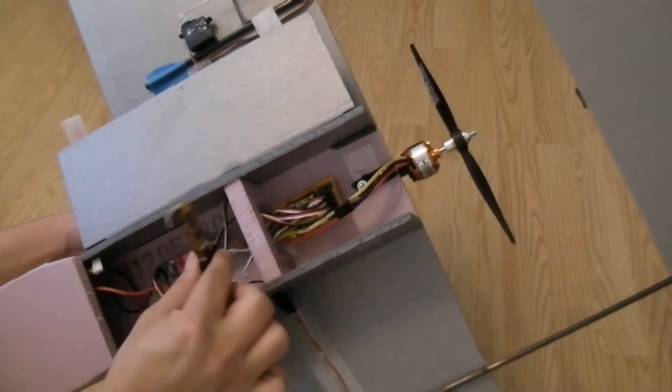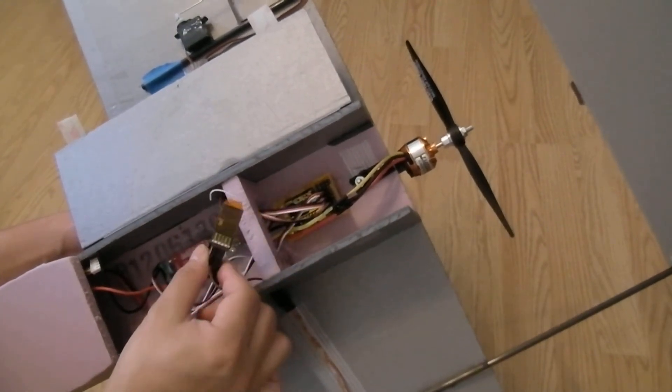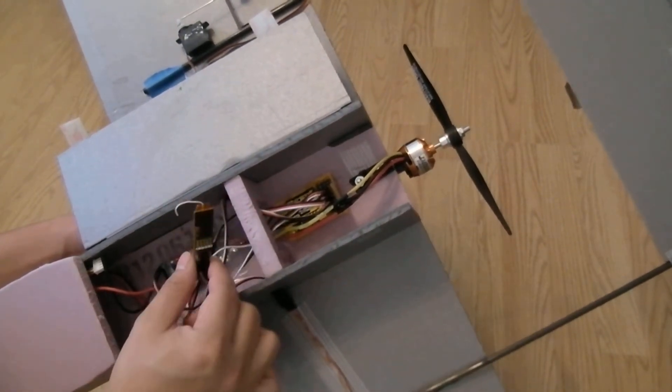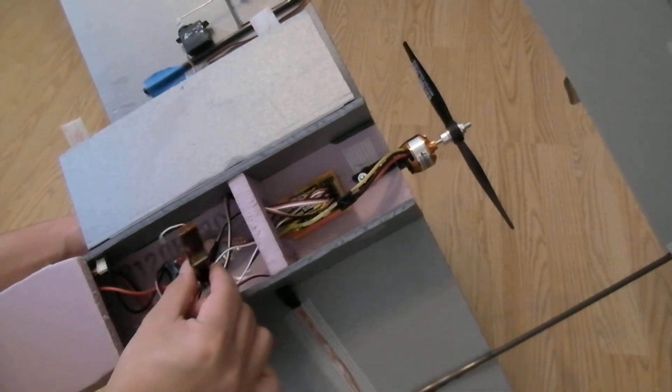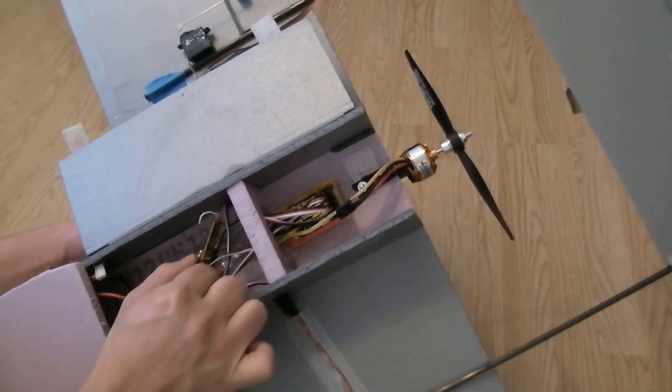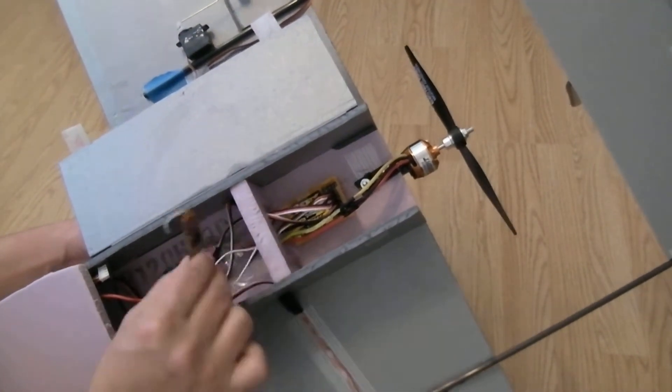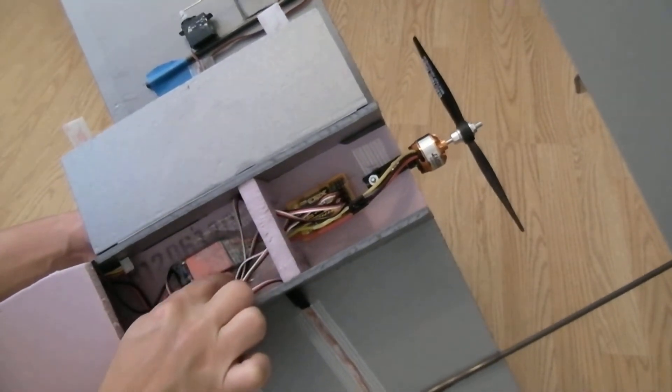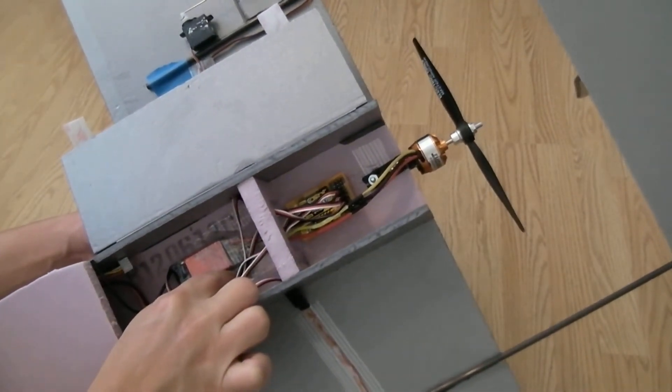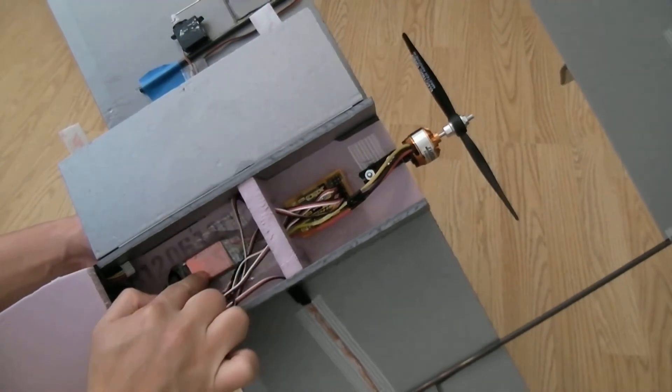And also, I use orange receiver, the smallest one. I don't even, it's so small and so light, I don't even bother to tape it or secure it. I use 20 amps ESC for this motor.